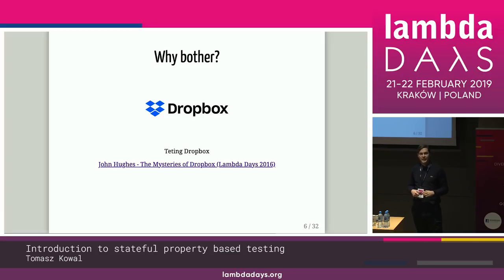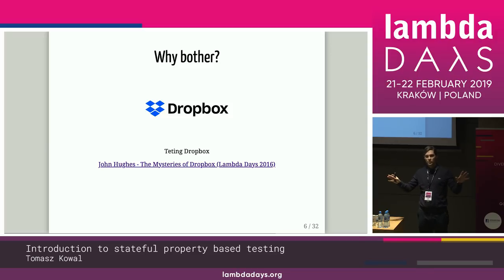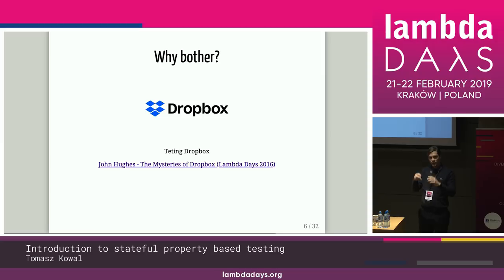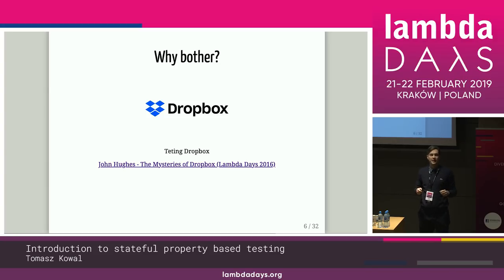Another great example is a talk by John Hughes from Lambda Days 2016. He was using property-based testing to test Dropbox. The problem with testing that is you don't know in which order operations go to Dropbox. If you have two computers and append something to a file on each, the operations may be out of order. The researchers created a model that took all possible orderings and outcomes of what Dropbox could do with those operations. If real Dropbox showed the same thing as any of those possibilities, the test passed. They still found a problem where you could lose data because of a synchronization issue.